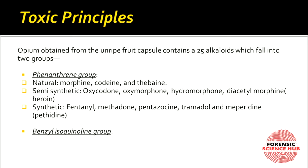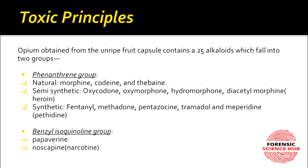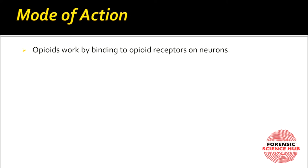For synthetic phenanthrenes come fentanyl, methadone, pentazocine, tramadol, and meperidine — also called pethidine. Notably, fentanyl is 100 times more potent than morphine and about 50 times more potent than heroin. The benzylisoquinoline group includes papaverine and noscapine, also known as narcotine.